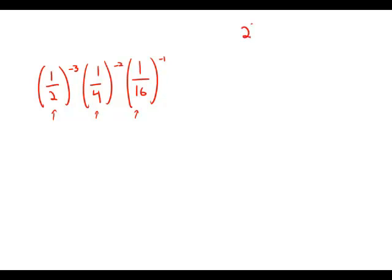And this is because 2 squared equals 4. So that means that 1 half squared equals 1 quarter. Similarly, 2 to the fourth equals 16. So 1 half to the fourth equals 1 over 16.